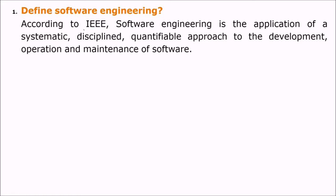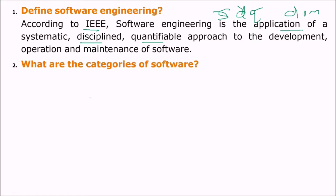According to the formal IEEE definition, software engineering is the application of a systematic, disciplined and quantifiable approach — SDQ — to the development, operation and maintenance (DOM) of software.